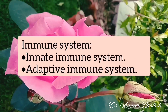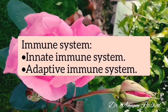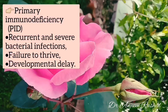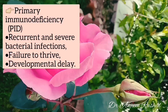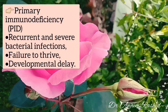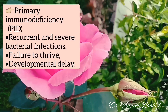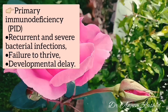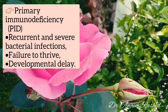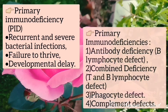The immune system consists of innate and adaptive immune systems. Primary immunodeficiency in children usually presents with recurrent and severe bacterial infections, failure to thrive, and developmental delay.